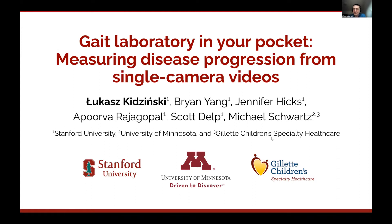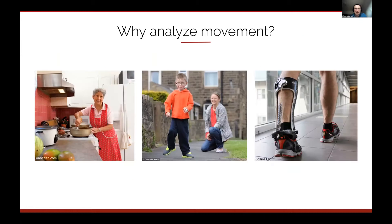Let me start with the general question of why we actually want to analyze movement — what's the motivation for our work. In our laboratory at Stanford, we're working with multiple populations of patients. One of the biggest populations we're interested in is elderly subjects with neuromuscular disorders such as osteoarthritis, Parkinson's disease, and Alzheimer's disease.